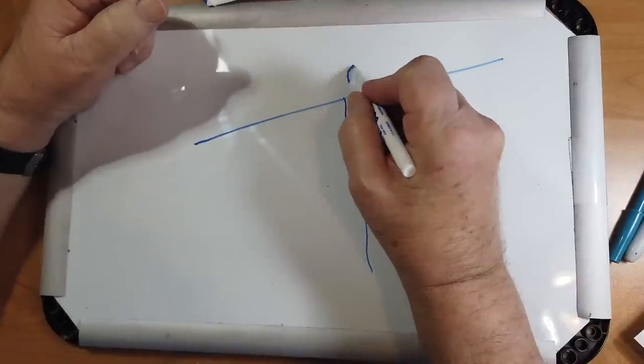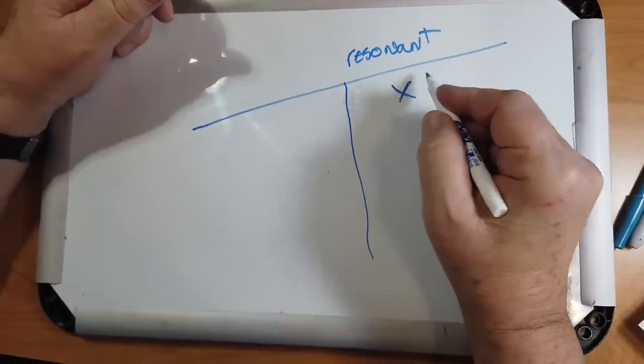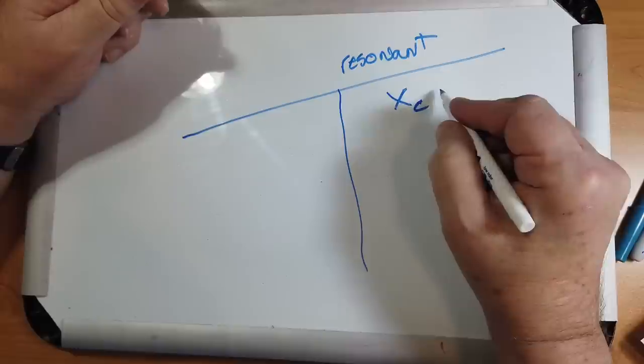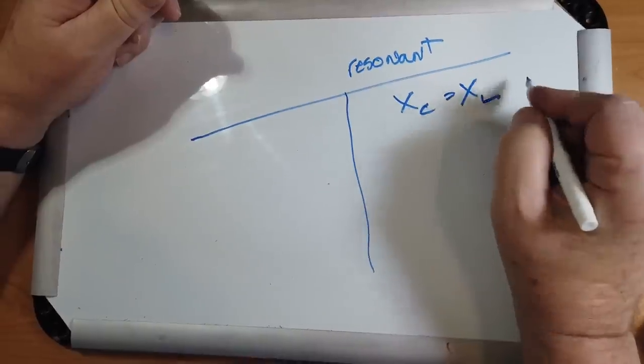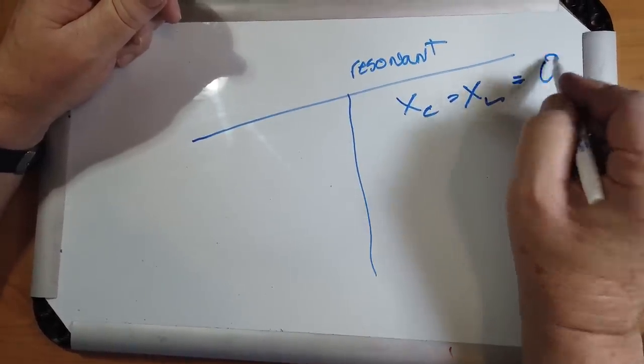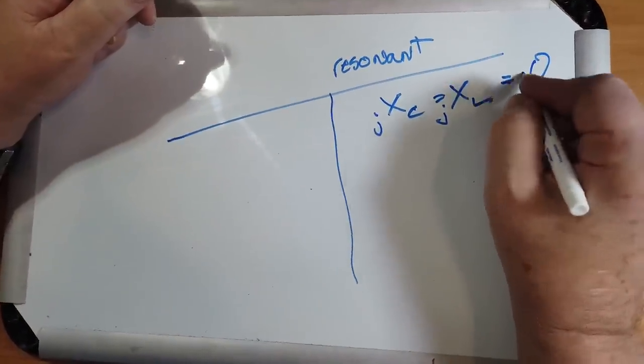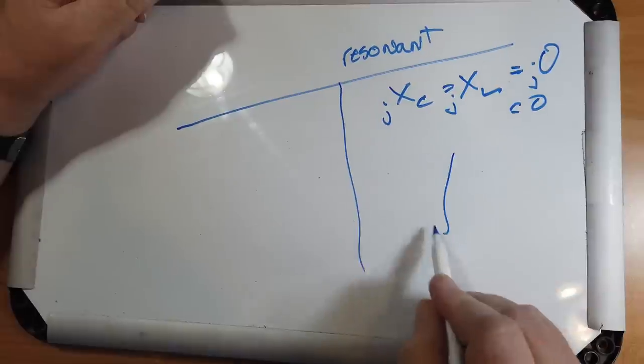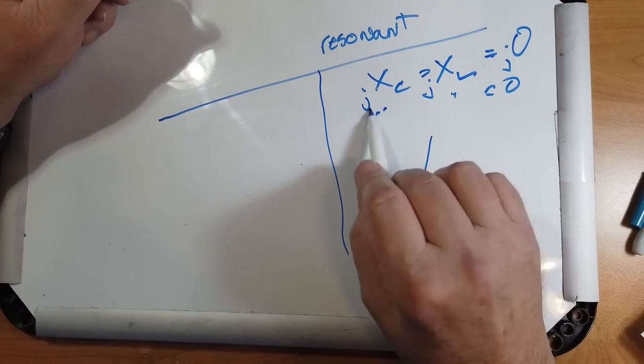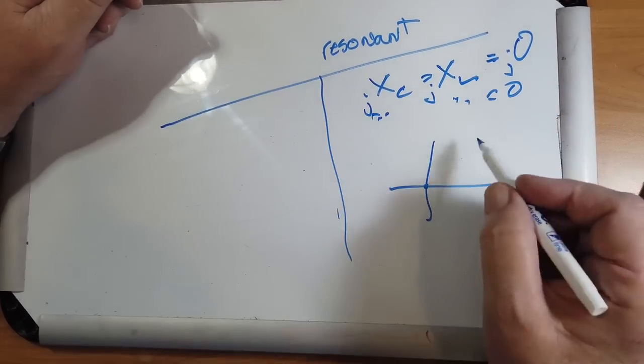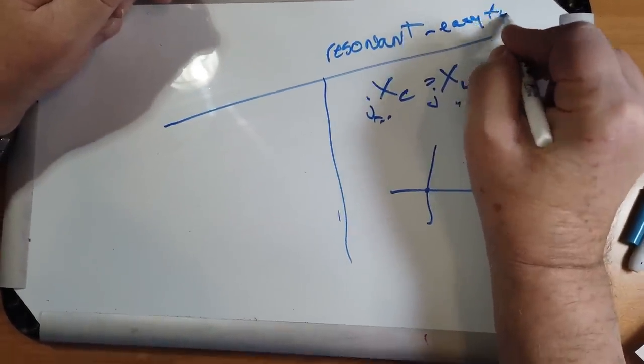They're resonant, which means that the X_C, that's the reactance of the capacitance, equals the X_L, all equals, and this is all zero. And you can put the j in the front if you want. j0 is equal to 0, by the way. That's where the two axes cross, right there. This right here, this little factoid, makes it easy to feed the antenna. So resonant, easy to feed.